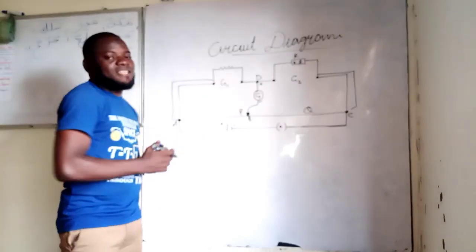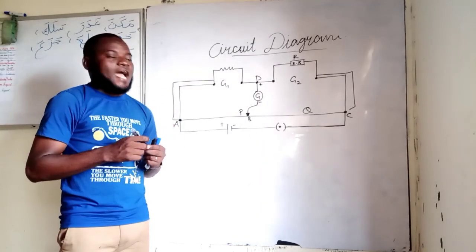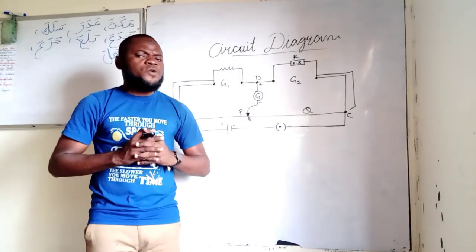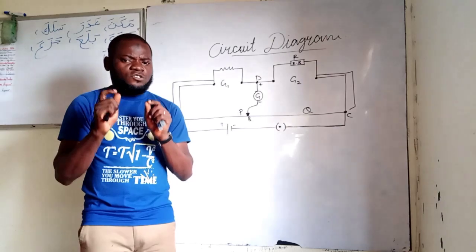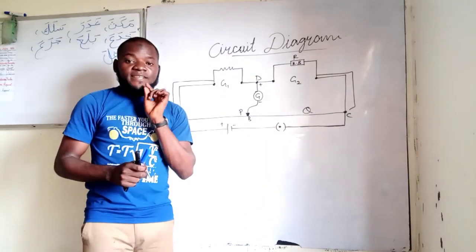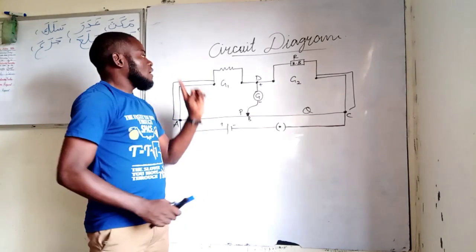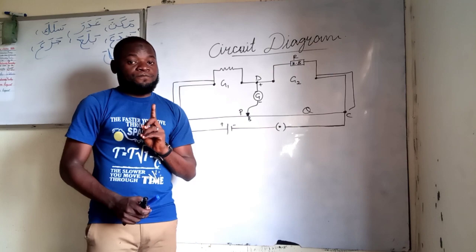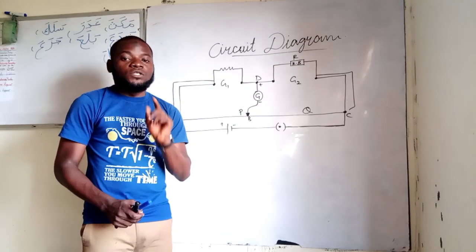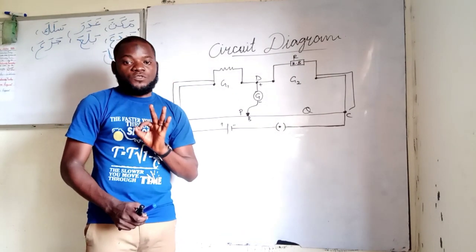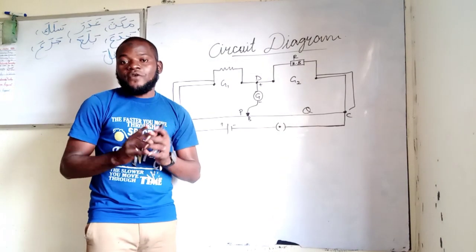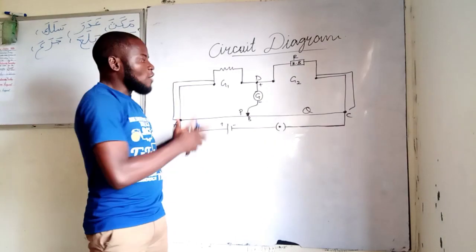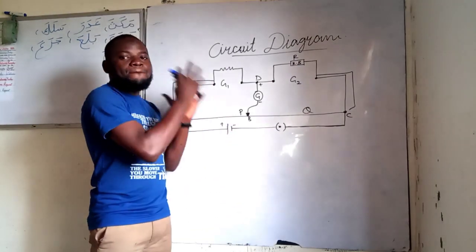Now having seen the diagram, let's quickly look at how we can connect the circuit successfully. Before we go into that, I would like you to note something in this particular experiment that we are going to be given by NECO. We are asked to make the known resistance two ohms, then connect another unknown resistor with that two ohms — we are going to see that as we proceed.